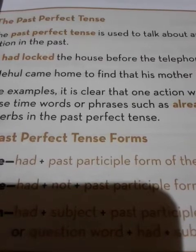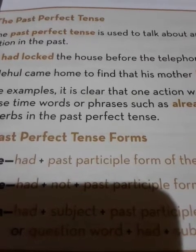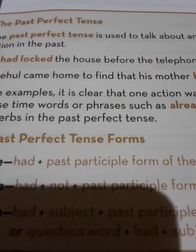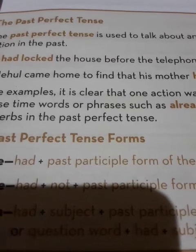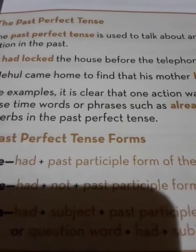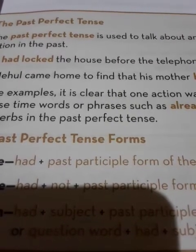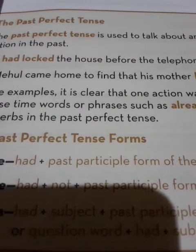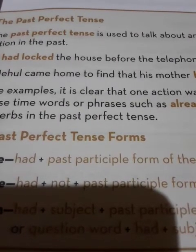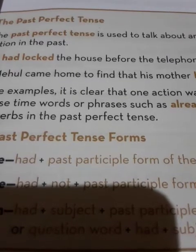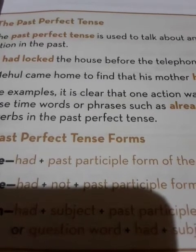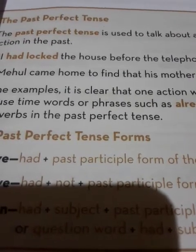Number 4: it is used as the past form of the present perfect in case of indirect speech. For example, Ritu said, 'I have prepared pudding.' This sentence is written in direct speech. When it is changed into indirect speech, it becomes: Ritu said that she had prepared pudding.